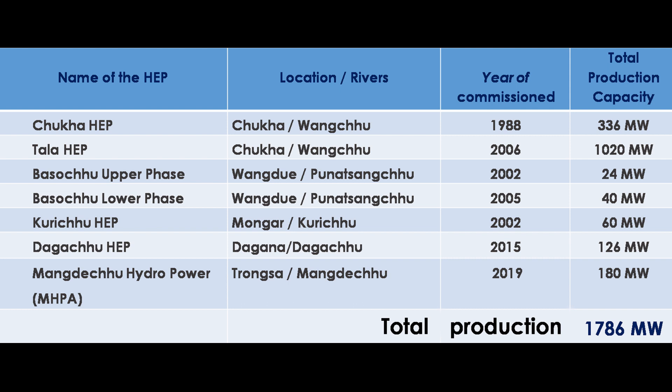The latest operational hydropower plant is the Mangdichu hydropower plant in Tongsa on the Mangdichu River. It became operational in August 2019 with a generating capacity of 180 megawatts. The total production of electricity in Bhutan is 1,786 megawatts.